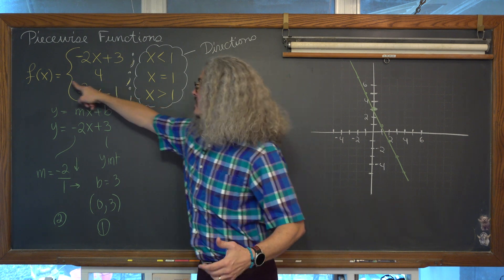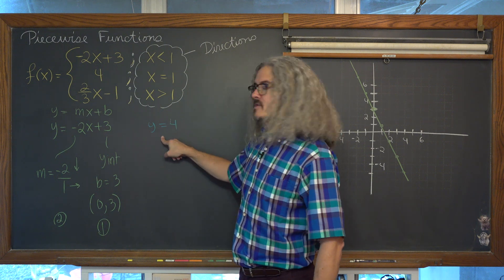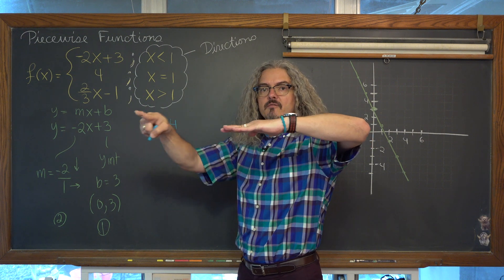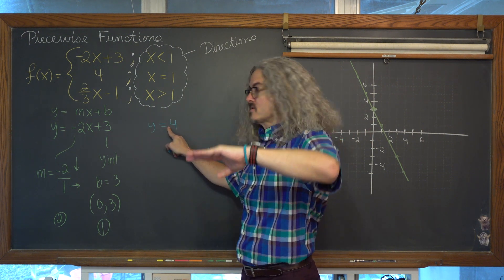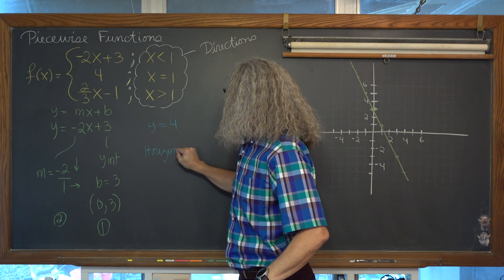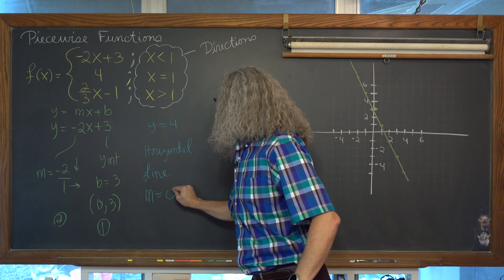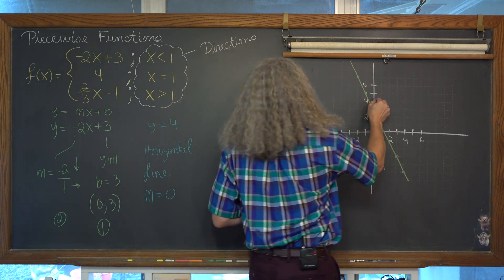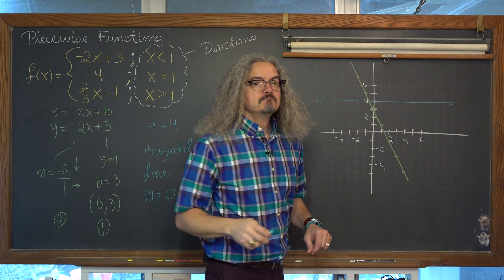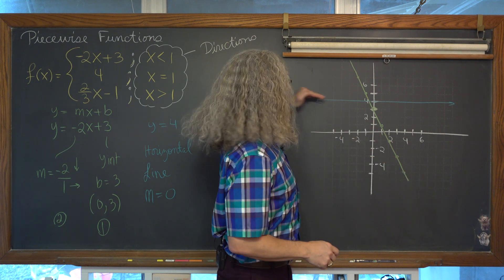Our second part of this equation is f of x — a fancy form of writing y — is equal to 4, and that's just the equation of a horizontal line. When you have y equal to a constant, the values of x can be anything but y is never going to change. So this is a horizontal line with a slope equal to 0. I'm going to go up to where y equals 4 and draw a horizontal line through my graph.